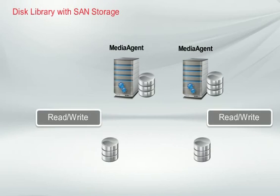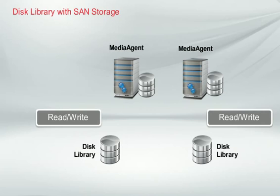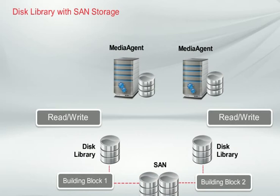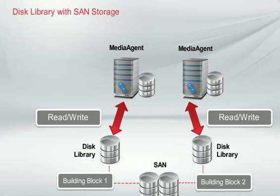When SAN storage, another method of configuring disk library datapaths, is used, each building block needs a dedicated media agent, DDB, and disk library. SAN storage can be zoned and presented to media agents by either Fiber Channel or iSCSI. Zoned storage is then presented directly to the media agent, providing read-write access to the disks. Commvault recommends that back-end disk storage in the SAN should reside in separate libraries to ensure fast and protocol-efficient movement of data.